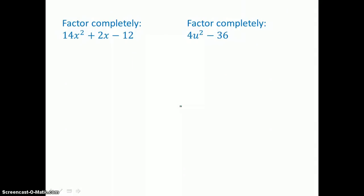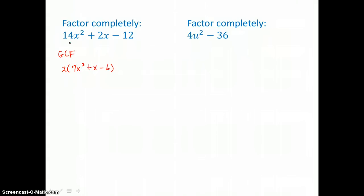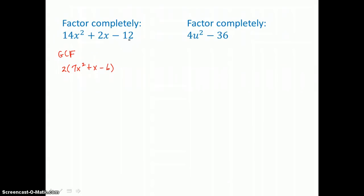In this example, we want to factor completely. That's a hint that there's a greatest common factor involved. There is a common factor to all three terms — it's 2. So I want to factor out that greatest common factor first. I'll be left with 7X squared plus X minus 6. I'll check by distributing: 2 times 7X squared is 14X squared, 2 times X is 2X, and 2 times negative 6 is negative 12. So it's factored correctly.